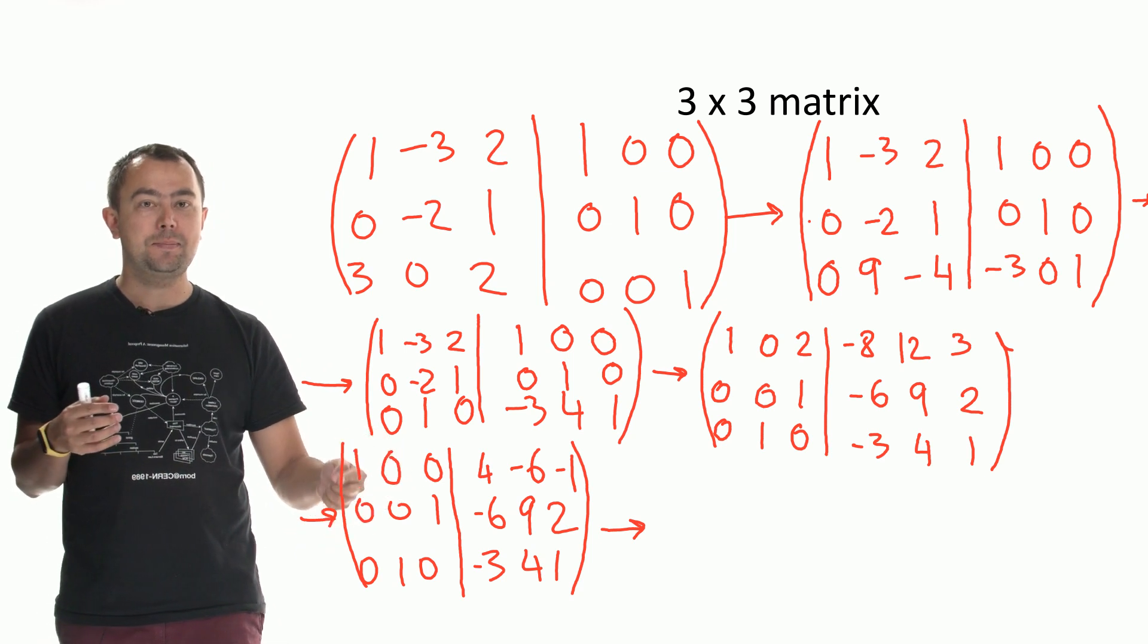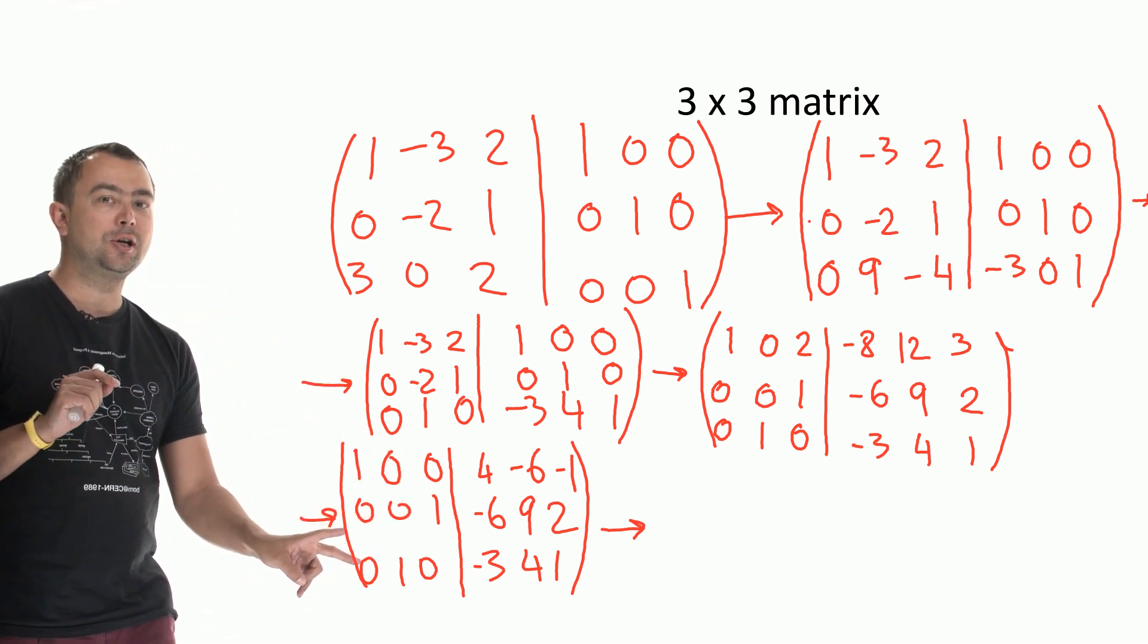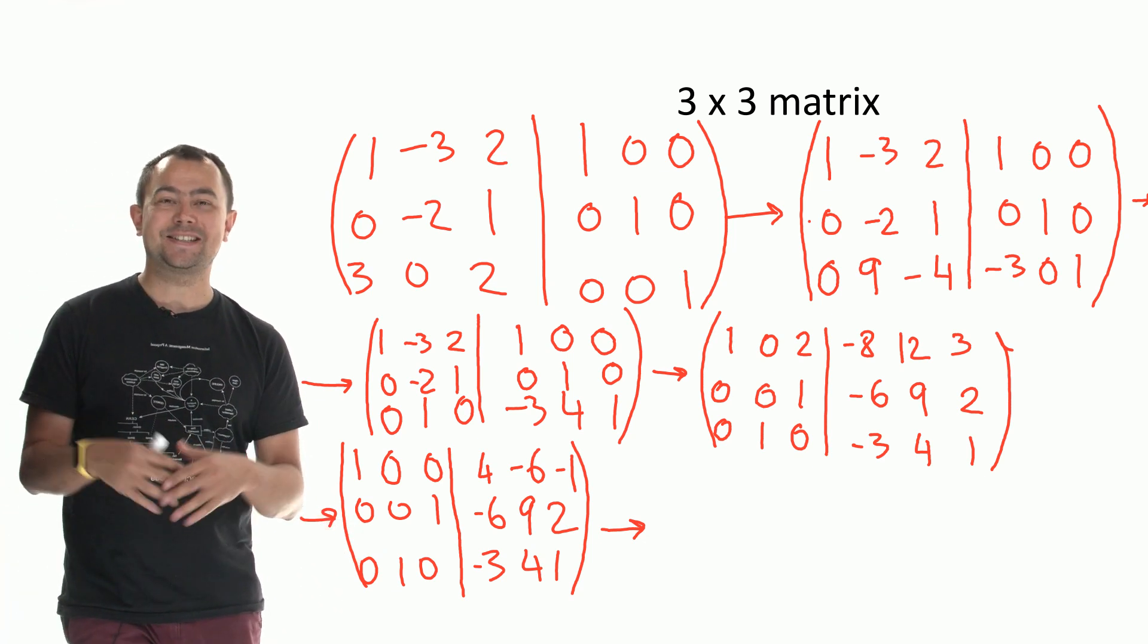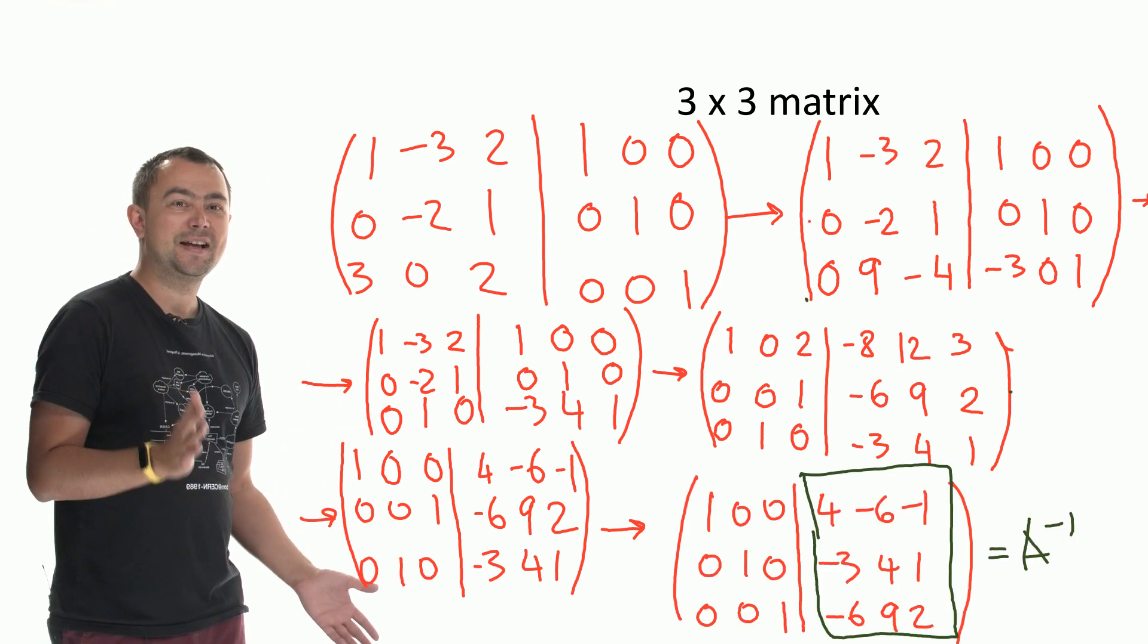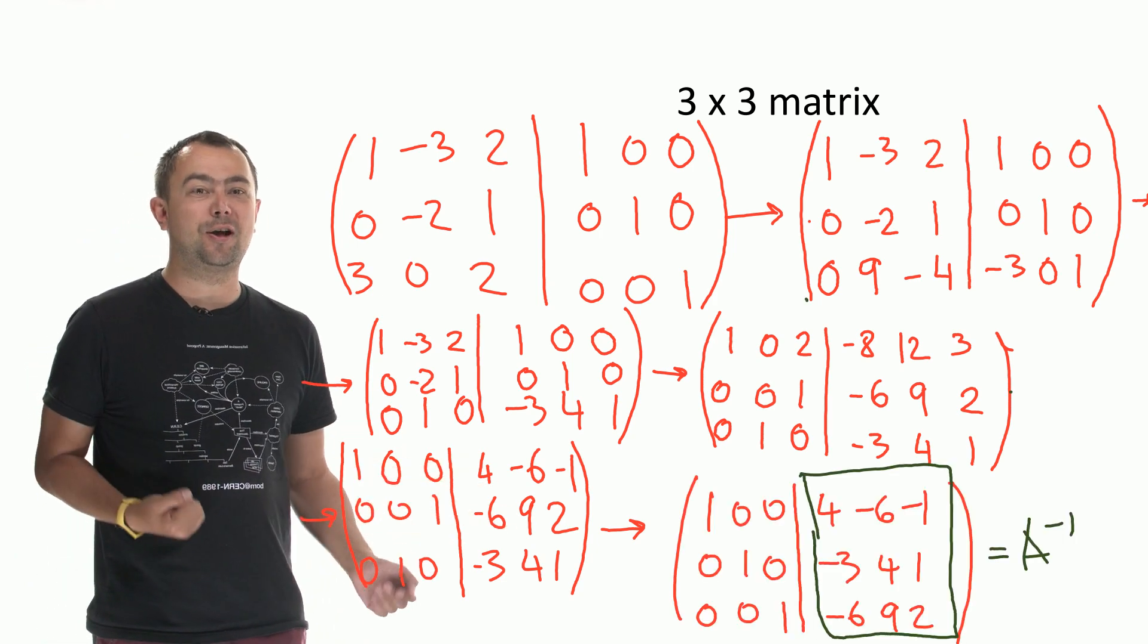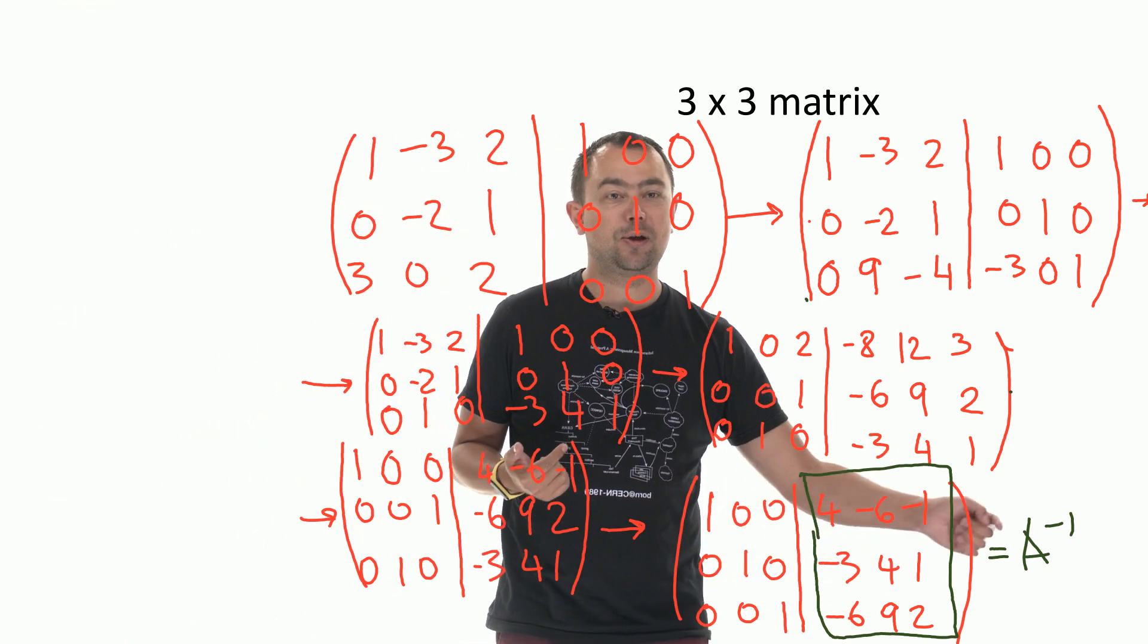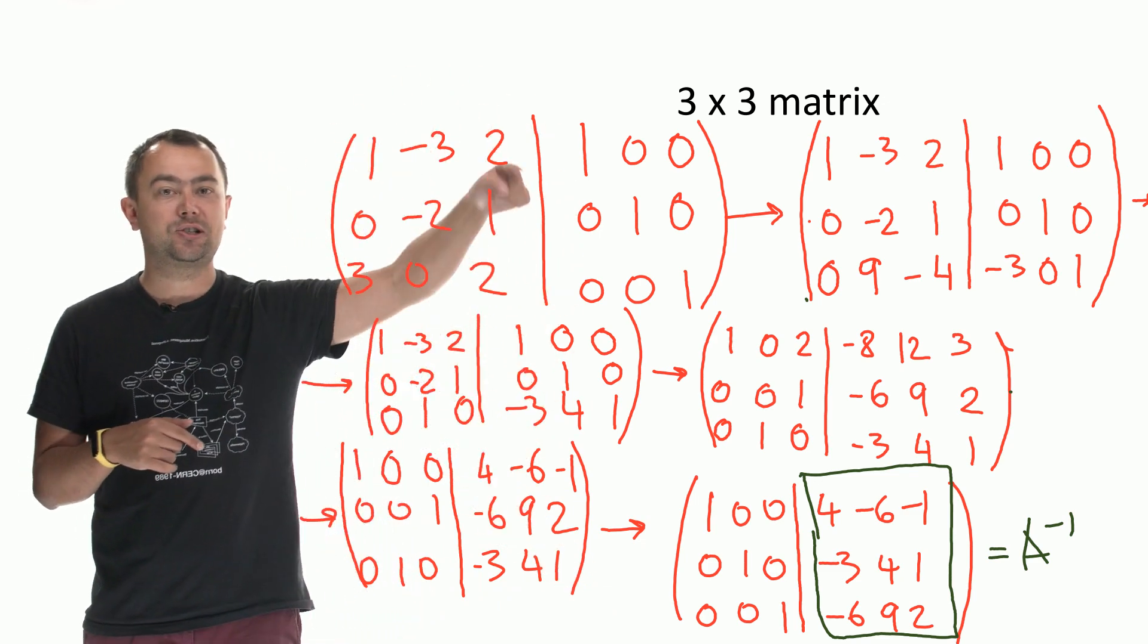Now, you can see that the matrix on the left is almost an identity matrix. All I need to do is switch the bottom two rows and I will get an identity matrix. So I'll do that now. So I switched the bottom two rows and now on the right I have the inverse matrix.